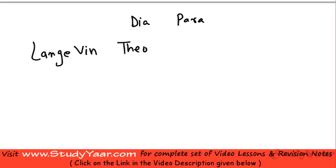In this lesson, we are going to learn about the concept behind diamagnetism and paramagnetism. Diamagnetism and paramagnetism is explained by what is known as Langevin's theory. We are going to learn about Langevin's theory for diamagnetism and paramagnetism. Let's start off with Langevin's theory for diamagnetism.